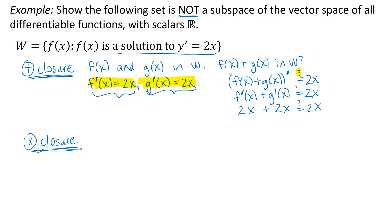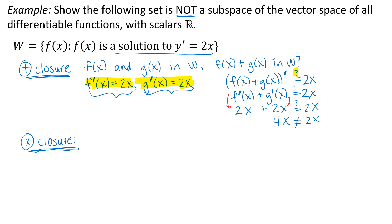All I did was replace f' with 2x and g' with 2x. At this point, 2x + 2x = 4x, which is not the same as 2x. So I do not have additive closure — additive closure fails, meaning the set is not closed with respect to addition. At that point, I'm actually done with this question. Since either condition in the subspace theorem failing is sufficient to show the set is not a subspace, and I've shown one fails, I'm done.